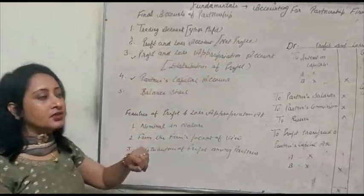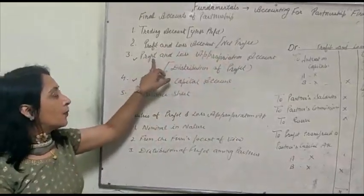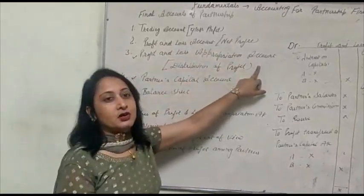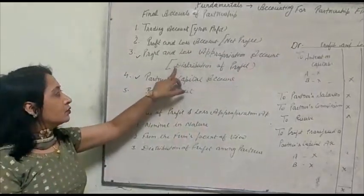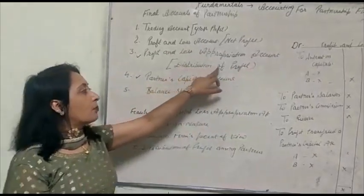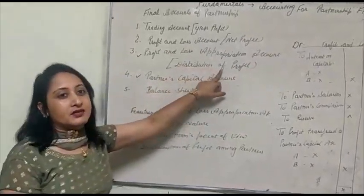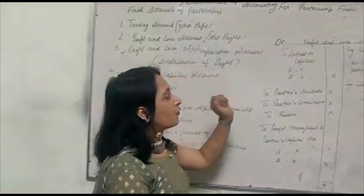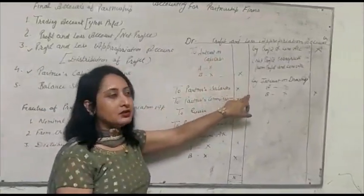But in partnership there is a new account: the profit and loss appropriation account. It is prepared for the distribution of profit among the partners. Now the specimen of profit and loss appropriation account is here.